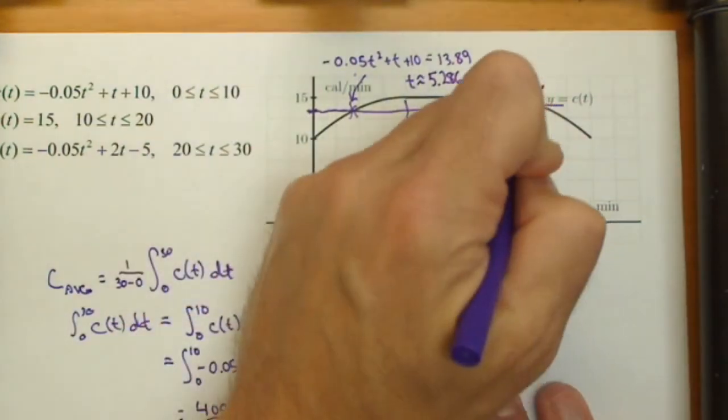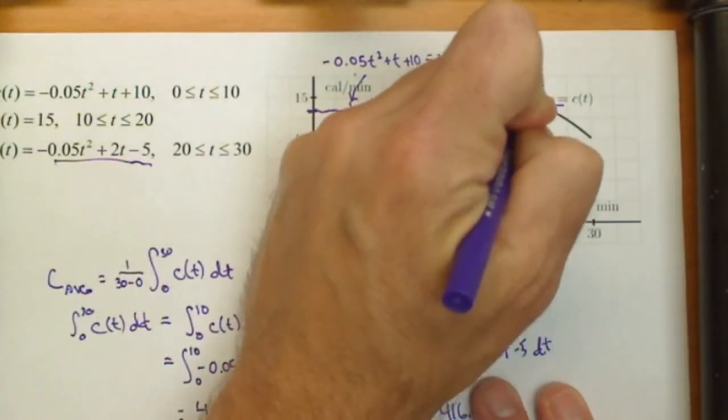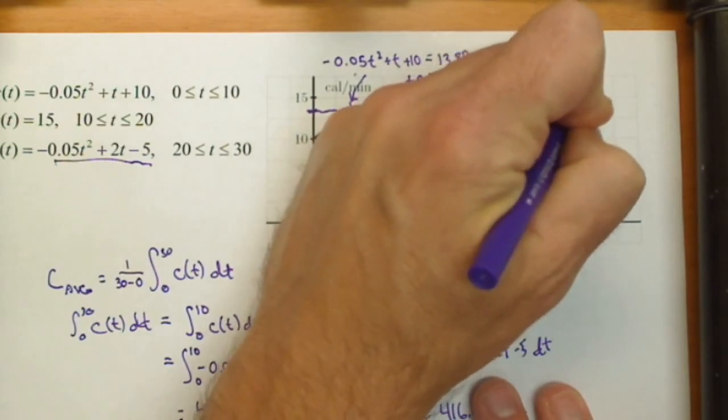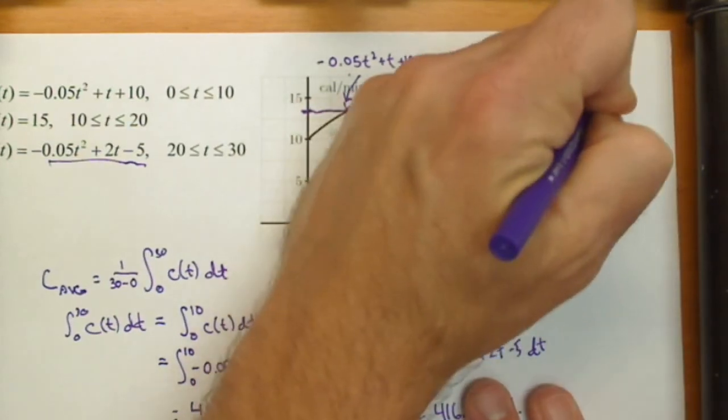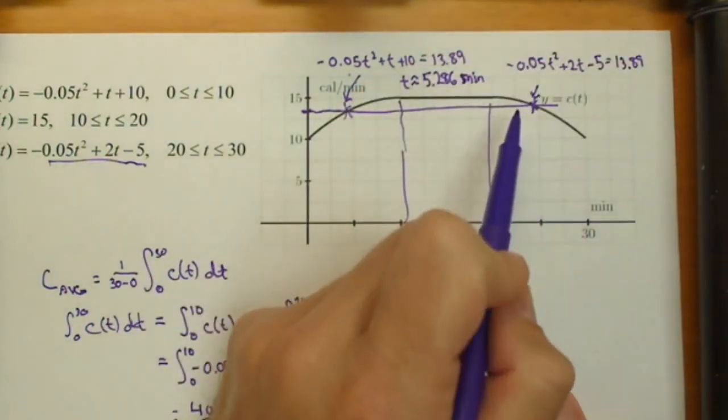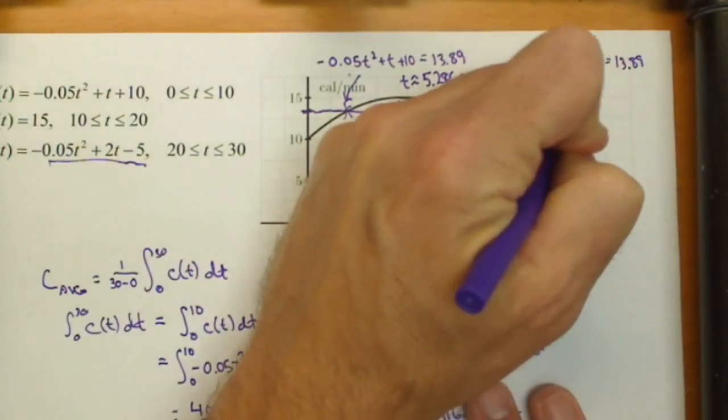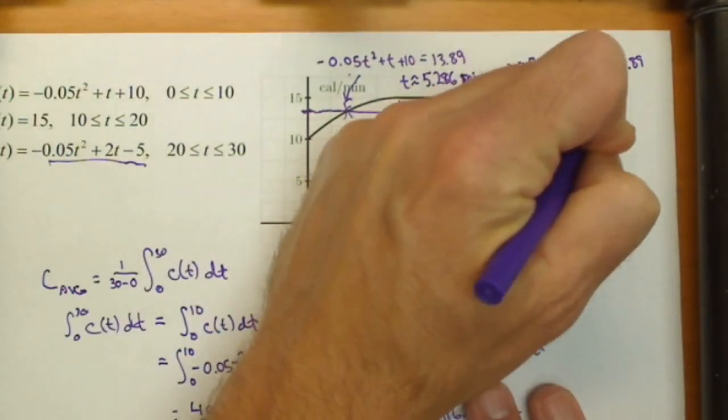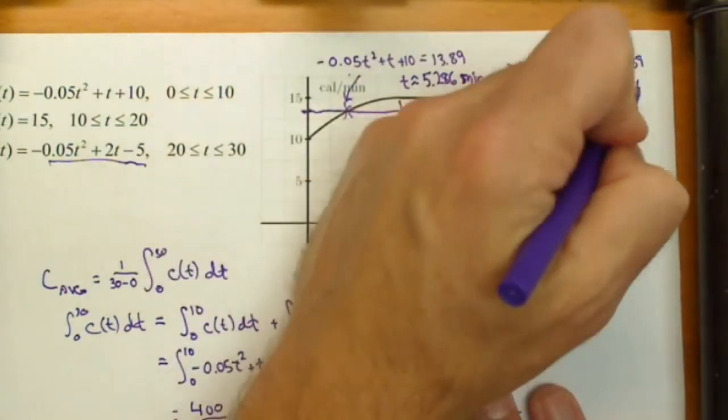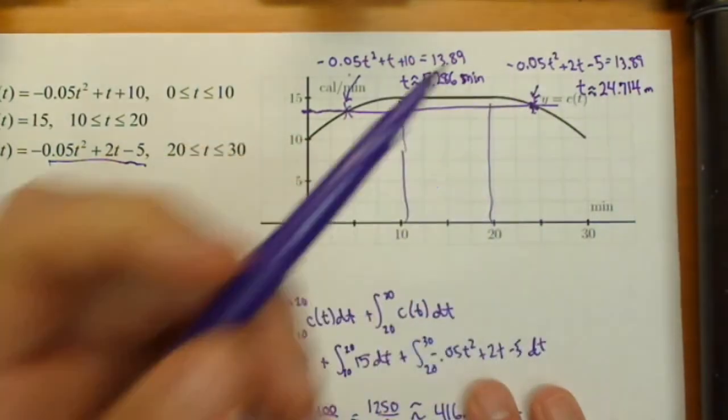Okay. Now, like we said, there's another point. But now over here, we gotta use this formula. So negative 0.05 T squared plus 2 T minus 5 equals 13.89. Solving this, again, you're gonna get two answers. Only one of them is gonna be in between 20 and 30. So T is about 24.714 minutes, and at that time, we're burning off exactly what our average rate is.